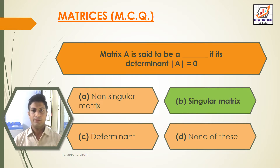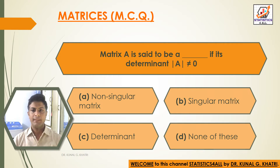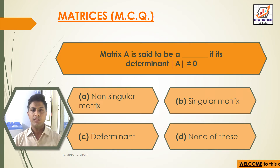Next question: matrix A is said to be [blank] if its determinant |A| is not equal to 0 — option A: non-singular matrix; option B: singular matrix; option C: determinant; option D: none of these. The answer is option A, non-singular matrix. If its determinant |A| is not equal to 0, the matrix A is a non-singular matrix.